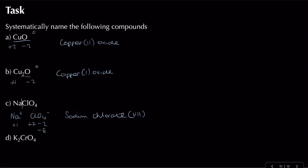For K2CrO4: potassium is plus one, two of them gives plus two, so chromate must be two minus. Oxygen is minus two, four oxygens gives minus eight. To get from minus eight to minus two, I need plus six — so the name is potassium chromate(VI).